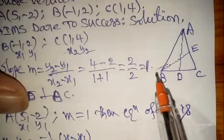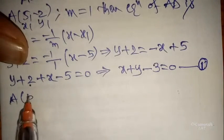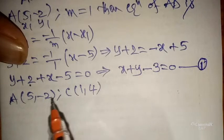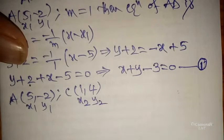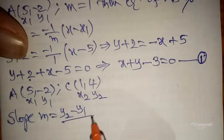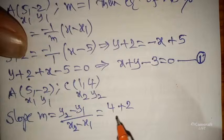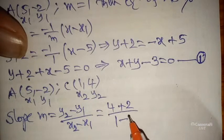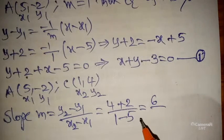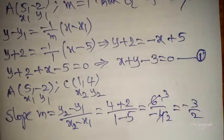Next, we find the slope of side AC. A is (5, -2) and C is (1, 4). Let these be (x1, y1) and (x2, y2). Slope m = (y2 - y1) / (x2 - x1) = (4 - (-2)) / (1 - 5) = 6 / (-4) = -3/2.